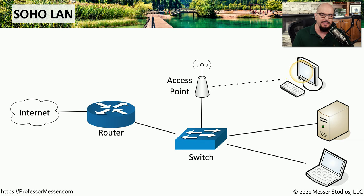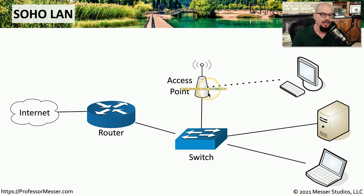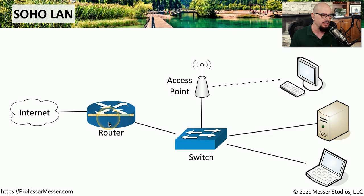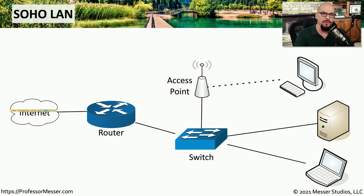You might have some devices that are connected over the wireless access point, and others that might be directly connected to the switch using a wired ethernet cable. If you're sending information from one of these devices, you might send it out over the wireless network to the access point, which would then transfer it to the switch, which sends it to a router, which sends it out to the internet. The real challenge for the network administrator is to determine what the route would be for this traffic and what type of equipment you would need to provide this connectivity.